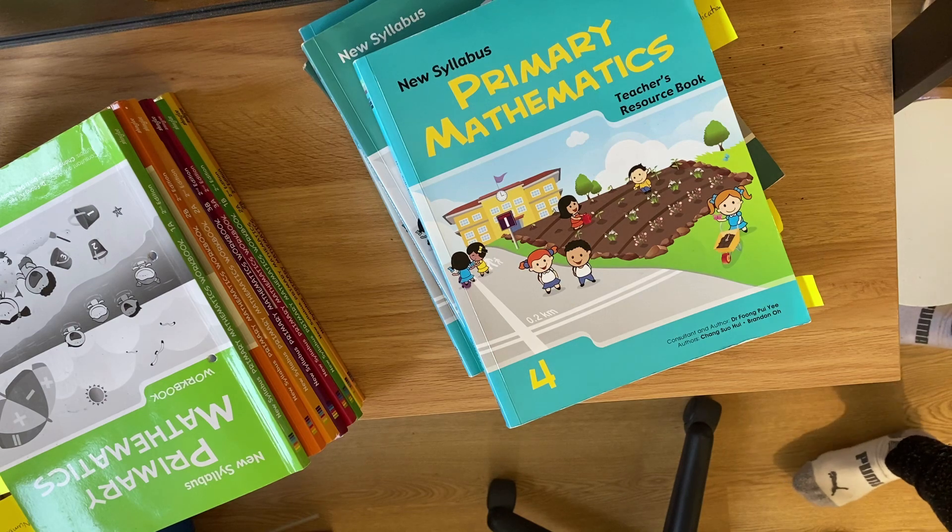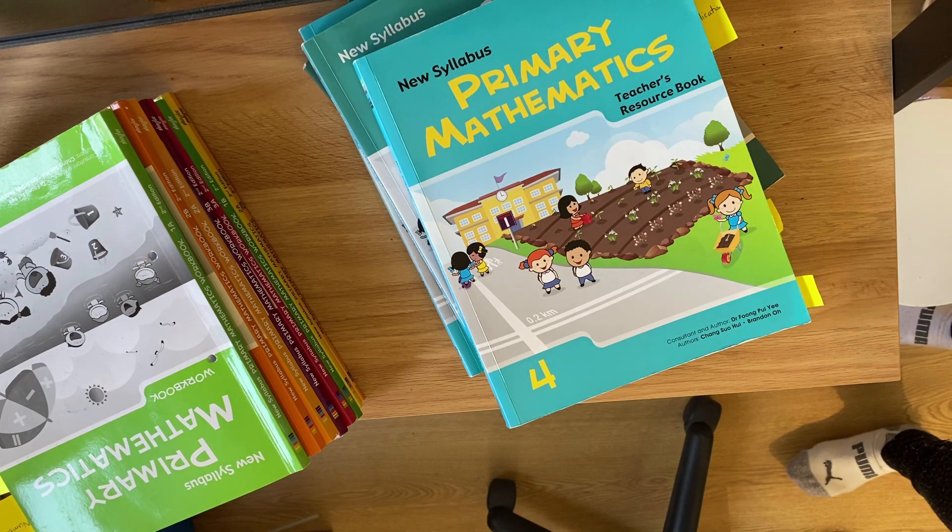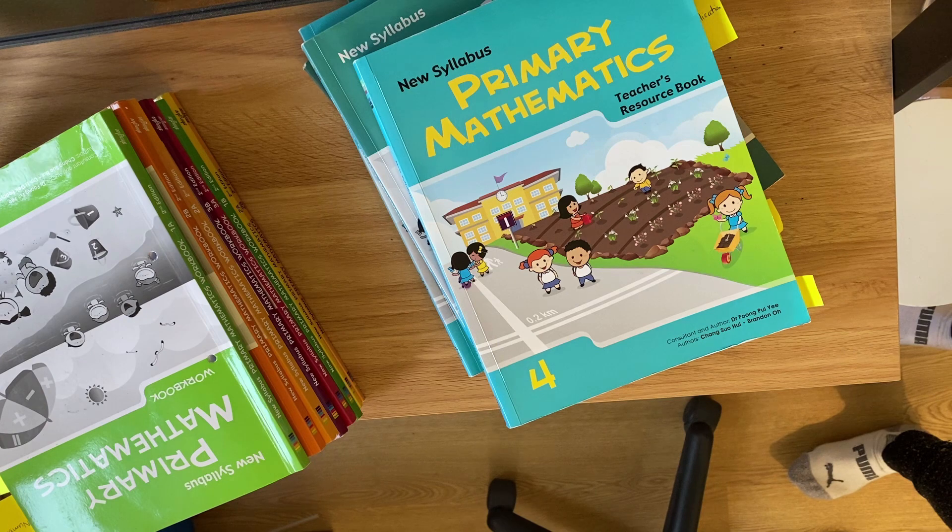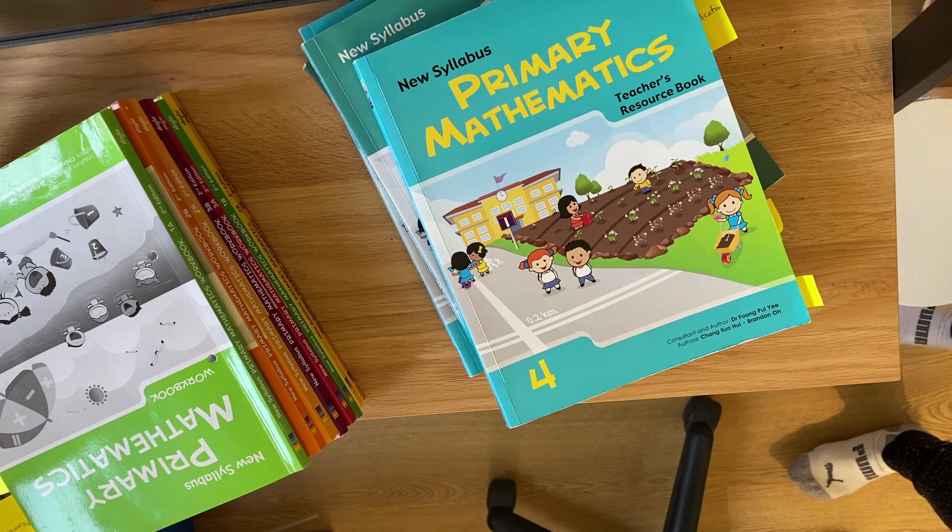This is in contrast to a spiral approach where you're constantly cycling through topics, coming back to them and slowly building up your knowledge in each topic throughout the year. Saxon Maths is an example of spiral maths if you're interested in exploring that a bit further.